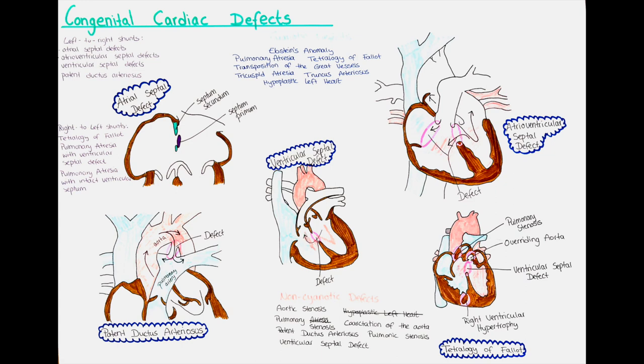In the last part, we will talk about Tetralogy of Fallot — a combination of four defects that occur together: a ventricular septal defect, pulmonary stenosis, overriding of the aorta, and right ventricular hypertrophy. It makes up around 11% of congenital heart defects and is the most commonly occurring cyanotic heart defect. It is due to a developmental defect of the septum aorticopulmonale, which normally separates the right and left parts of the outflow vessels — the aorta and pulmonary artery.